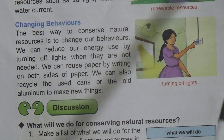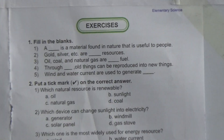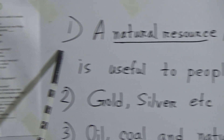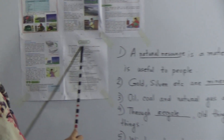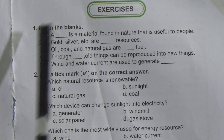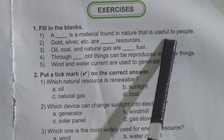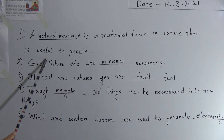Students, now we will do the filling the blanks. Here is page number 55 — there are five filling the blanks total and we will solve all five. First filling the blank: 'A dash is a material found in nature that is useful to people.' Answer: a natural resource is a material found in nature that is useful to people.